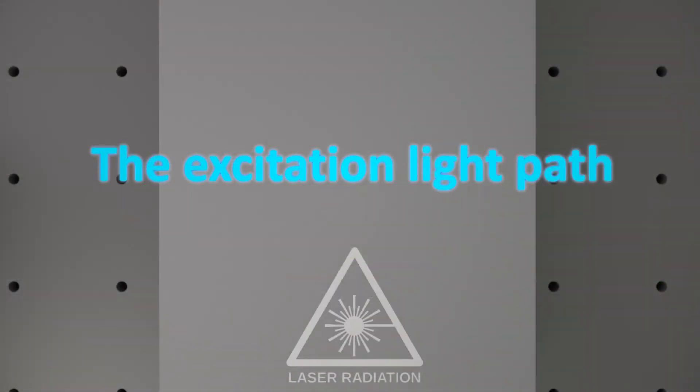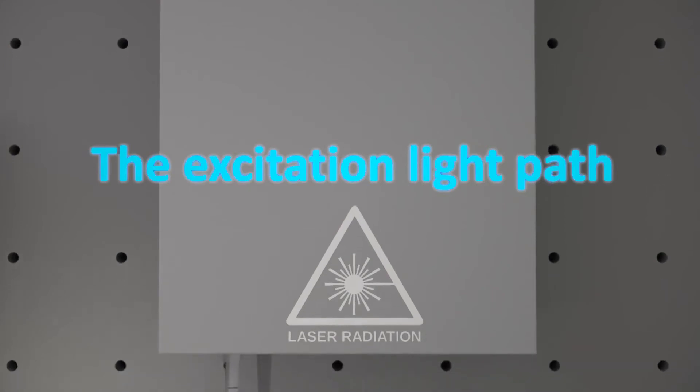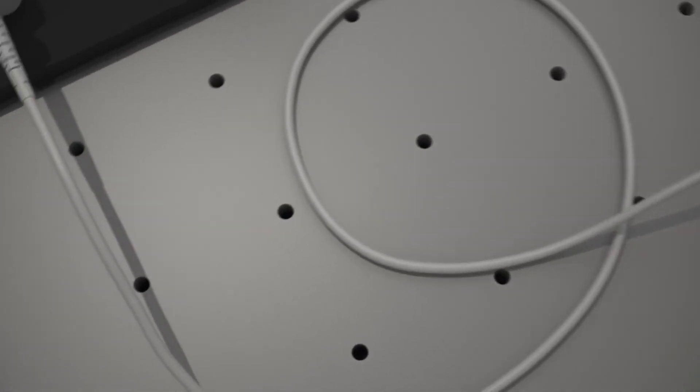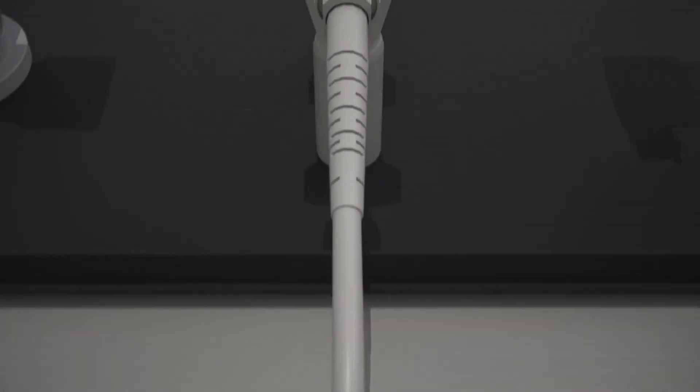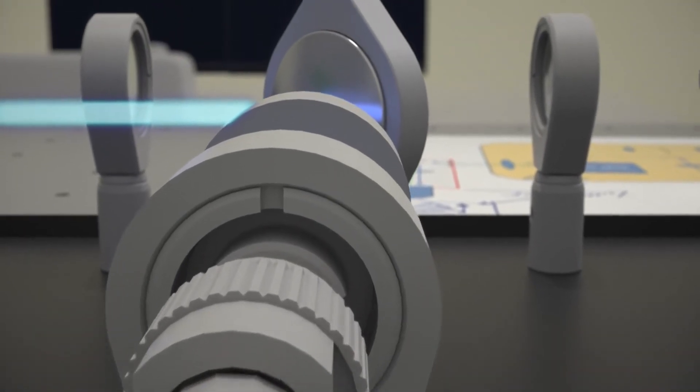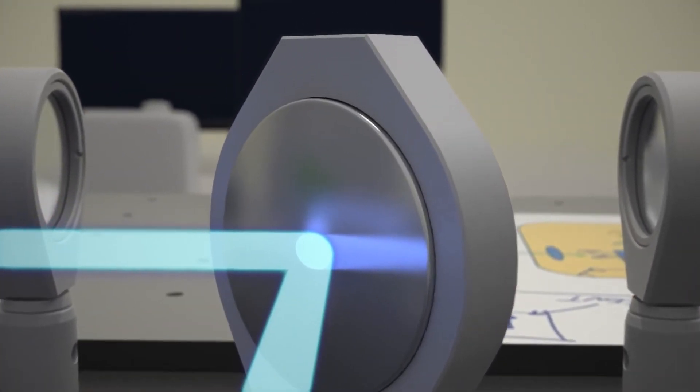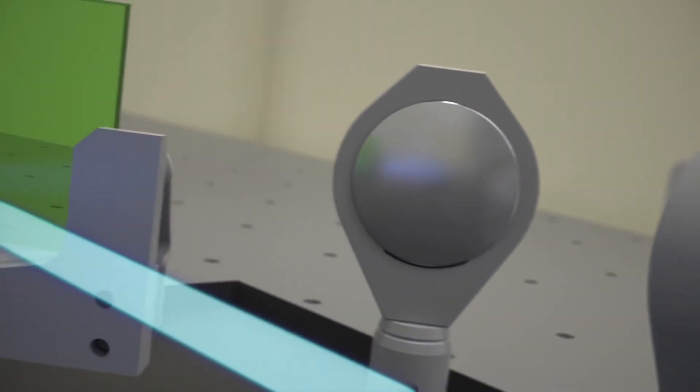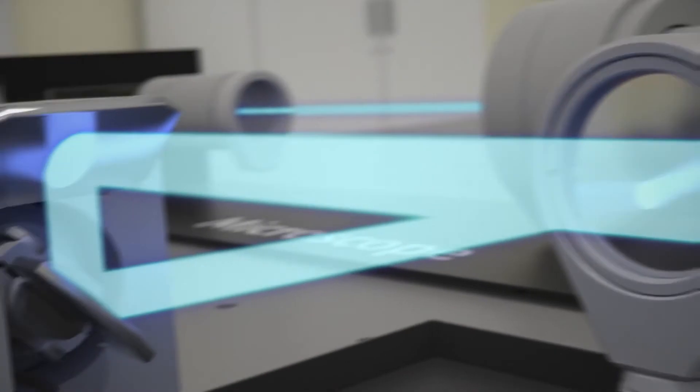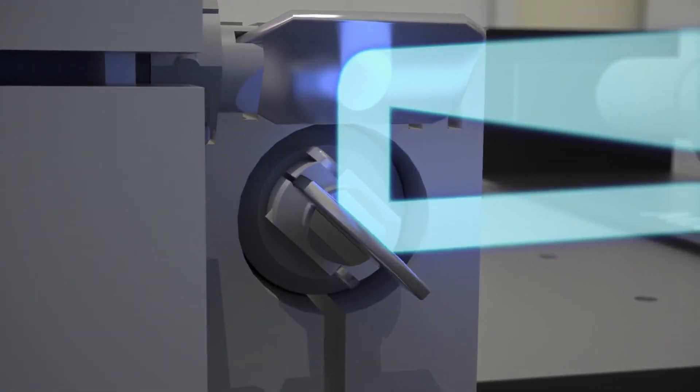The excitation light path. The excitation light from the laser is guided by the fiber into the RCM unit. From the tip of the fiber, the light is collimated by a lens and hits the first mirror. The collimated beam is reflected by the dichroic mirror. The mirrors of the scanner direct the beam to the scan lens.